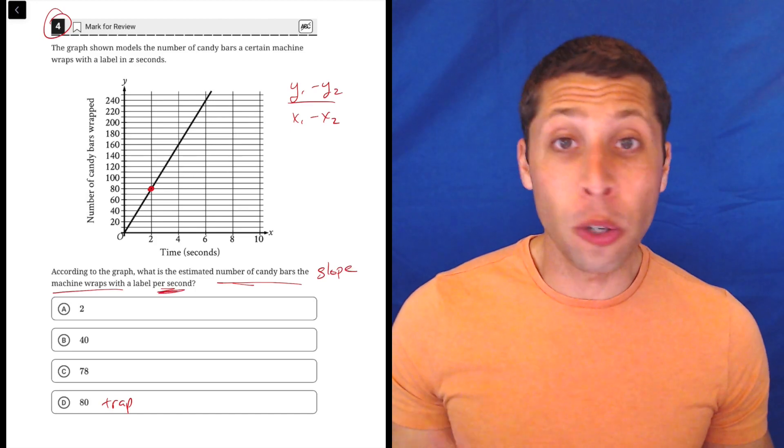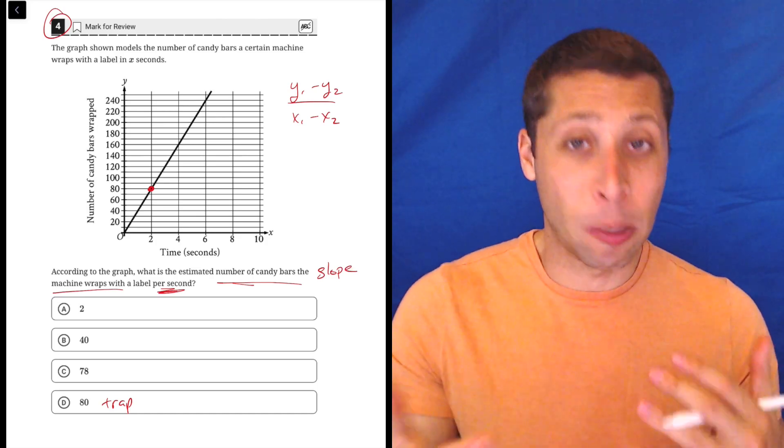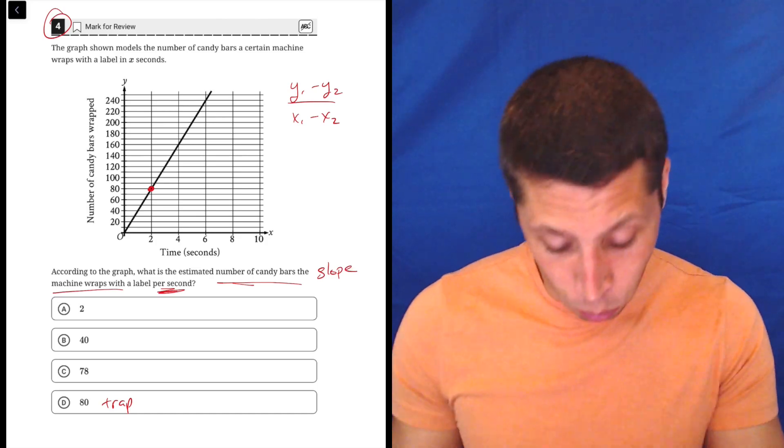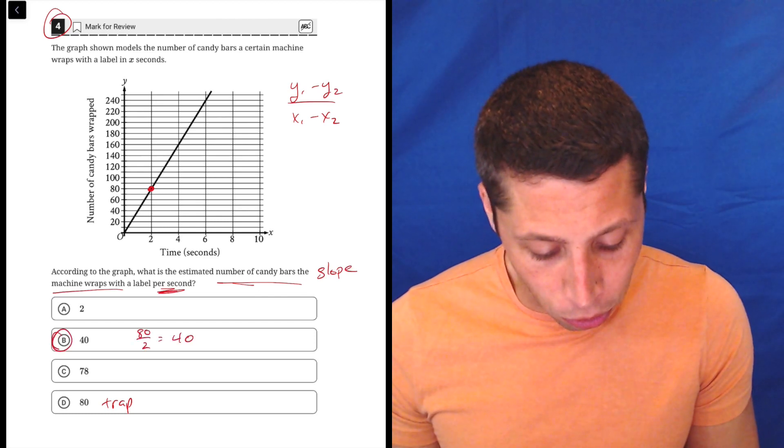But this math is pretty easy to do even just in our heads, right? If it's making 80 candy bars in two seconds, it's probably making 40 candy bars in one second. So that's just a simple 80 divided by 2 equals 40.